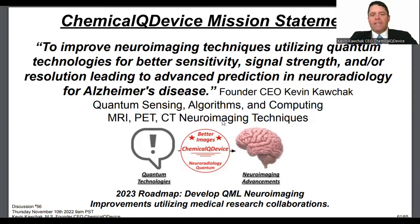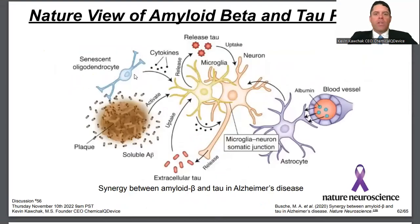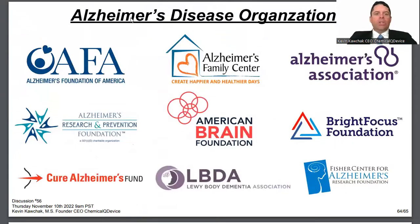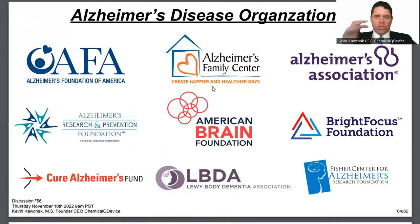The roadmap is to develop in 2023 QML neuroimaging improvements utilizing medical research collaborations. A lot of this has to have application — Alzheimer's affects 6 million people in the US. As seen on the title slide, over $300 billion is spent annually for the disease. This is an updated 2020 Nature approach showing it's not just amyloid beta or tau — these are articles to find on Neuroscience News, and organizations to be part of. I volunteered at the Alzheimer's Association walk in San Diego. You hear stories from caretakers of how hard it is.